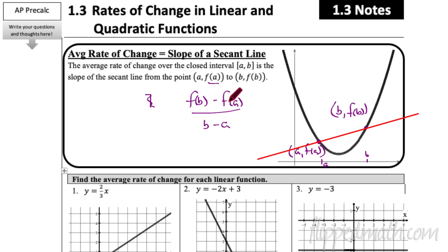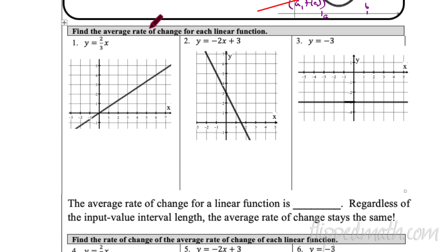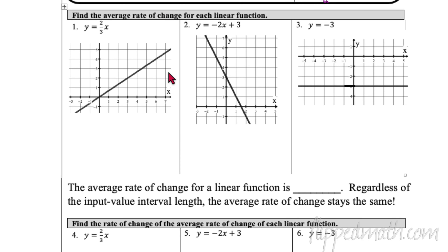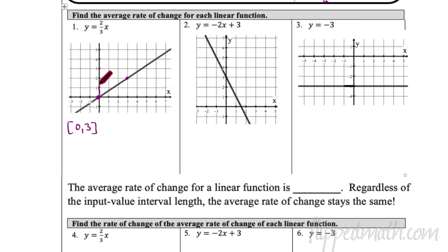Today we're looking at linear functions and quadratic functions. Linear functions are straight lines, and we want to find the average rate of change for each. For number one, I'll find two points. I love (0, 0) because it gives easy math. The other point is (3, 2), so the interval goes from 0 to 3. The average rate of change is up 2 over 3, which is 2/3.